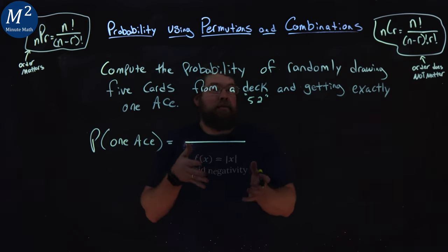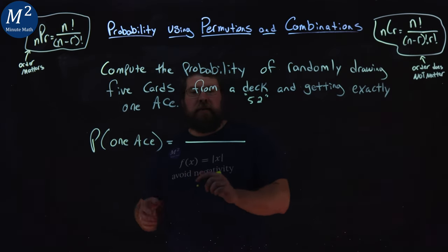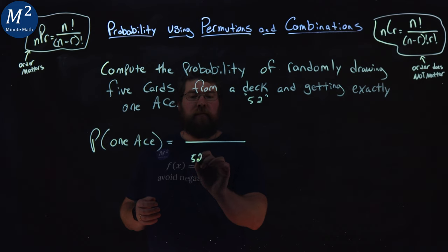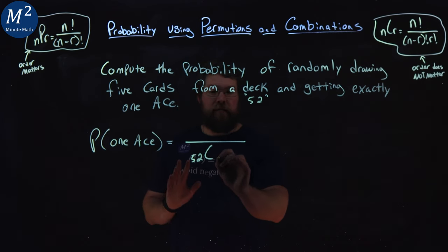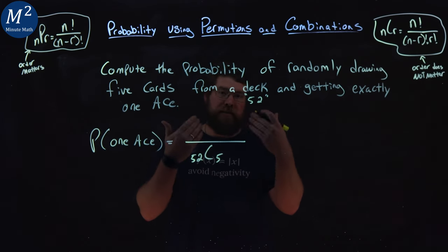Our total number of ways to get our five cards would be 52, the 52 cards, and we're choosing five. That's going to be our total. That's going to be in the denominator.